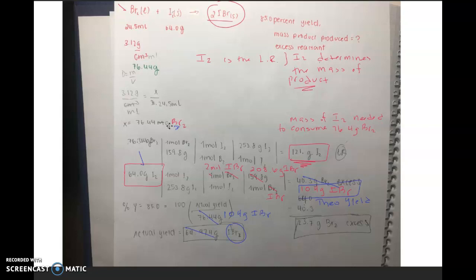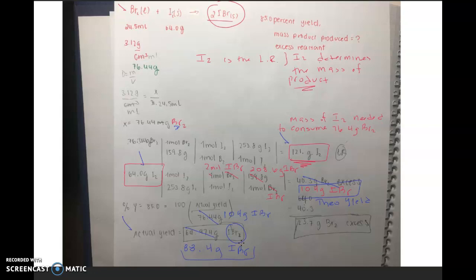You're going to have 104 times 0.85, so this gives 88.4 grams of IBr, and so that's the actual yield. Notice what we've done so far: you determined the limiting reactant — it's iodine — and you determined the actual yield, the amount of product produced, taking into account the percent yield, the fact that the reaction is 85% yield.